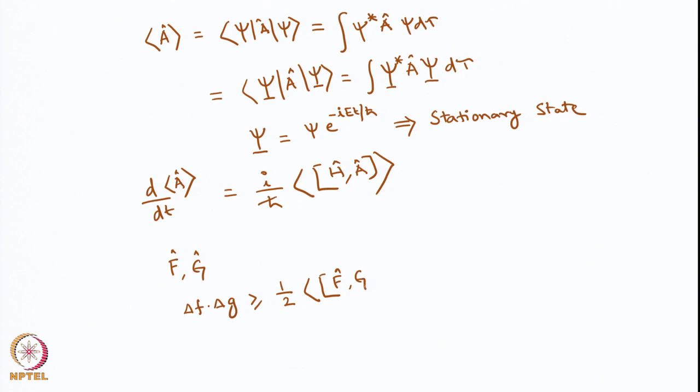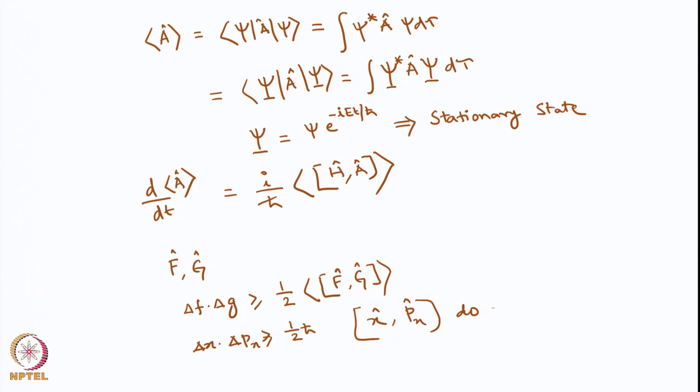For example, Heisenberg's uncertainty principle states that Δx · Δpₓ ≥ ħ/2, which means the operator x and the operator pₓ do not commute — in fact, their commutator is not equal to zero.